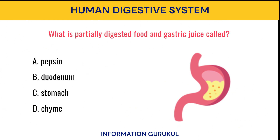What is partially digested food and gastric juice called? Chyme.